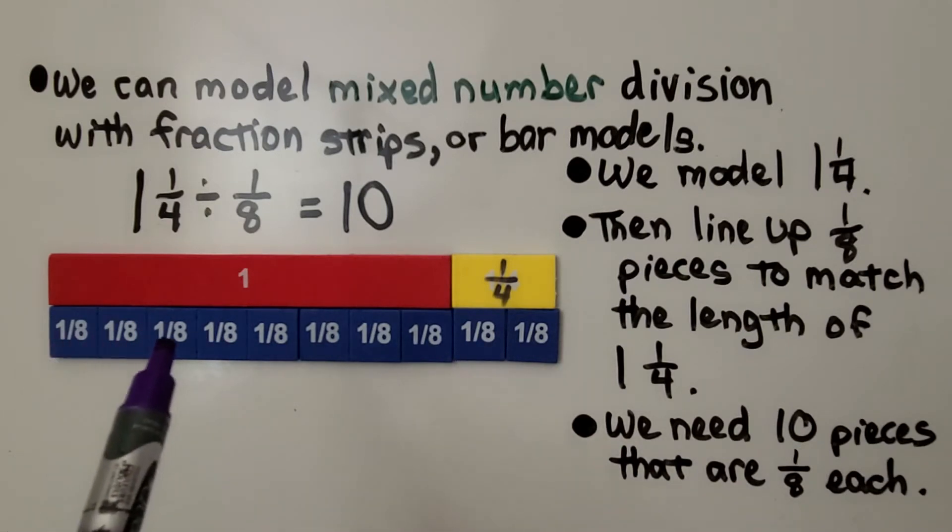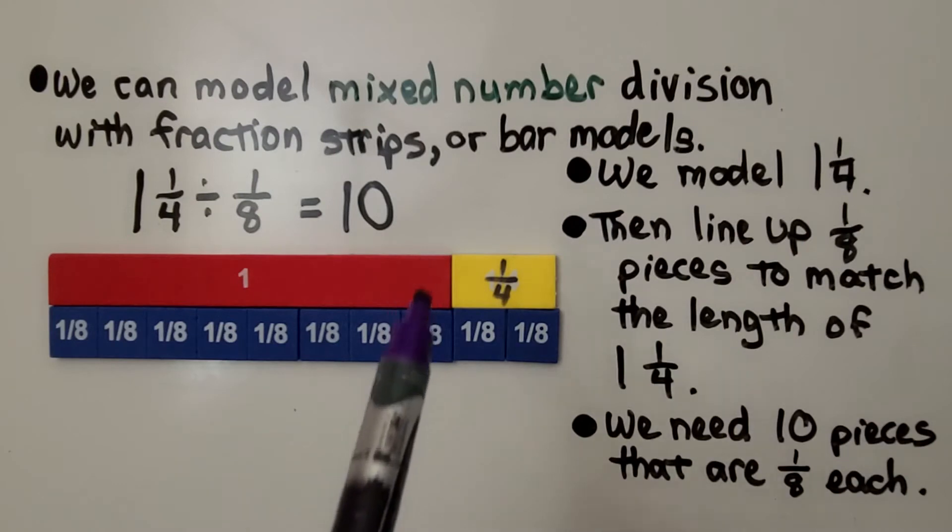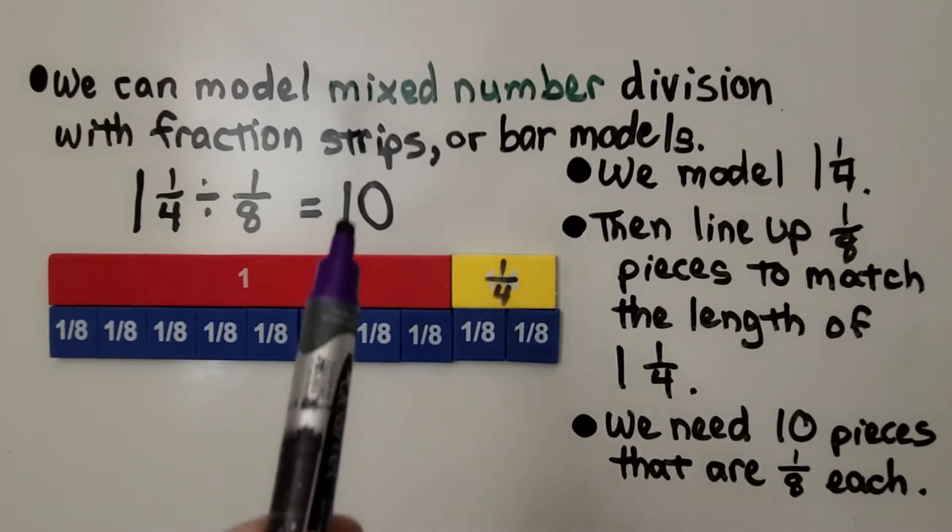We can see there's 1, 2, 3, 4, 5, 6, 7, 8 – there's 8 eighths in one whole, and then we have 2 little eighths. That's 10 pieces that are ⅛ each. The quotient is 10.